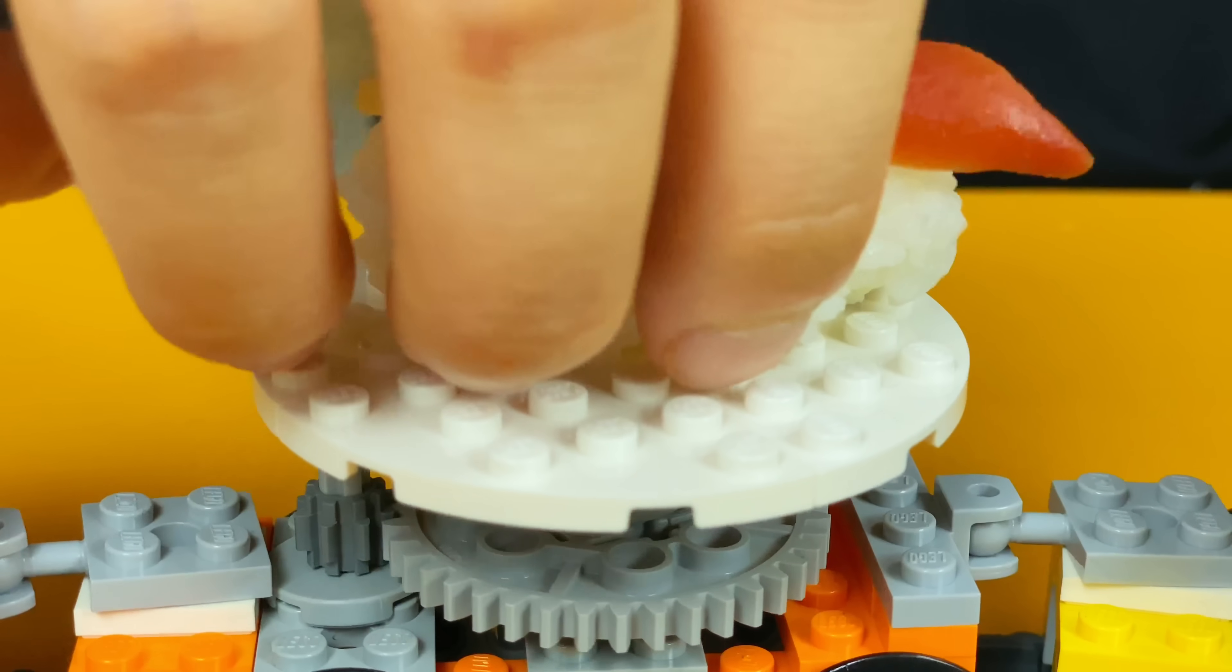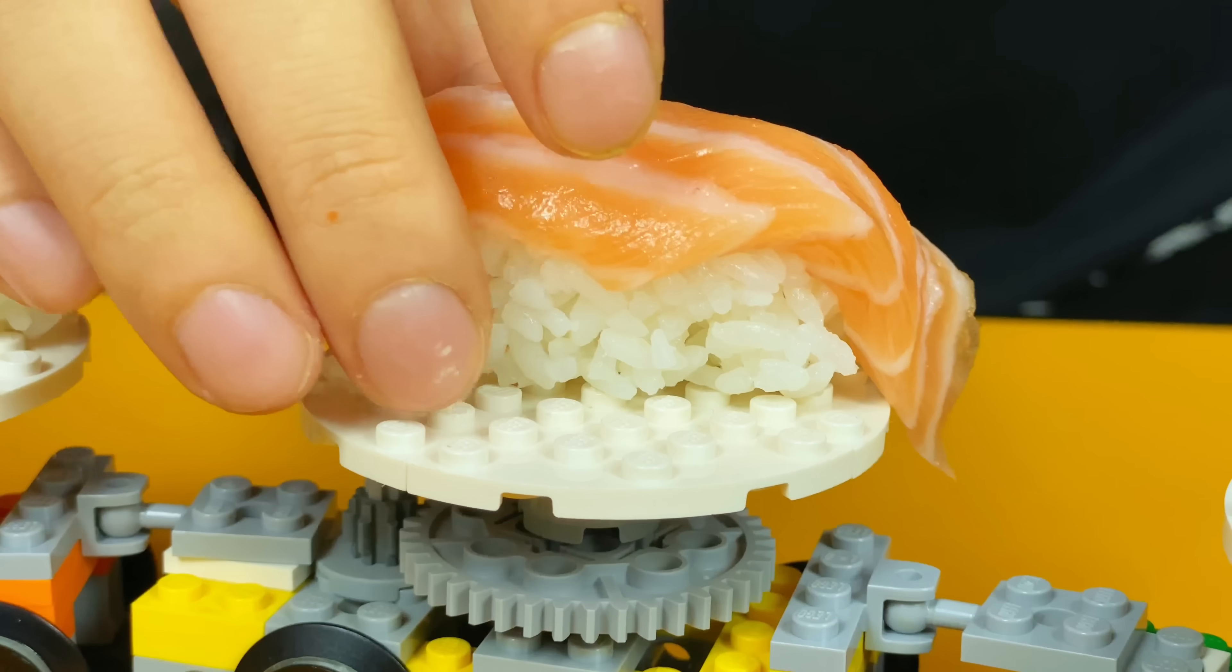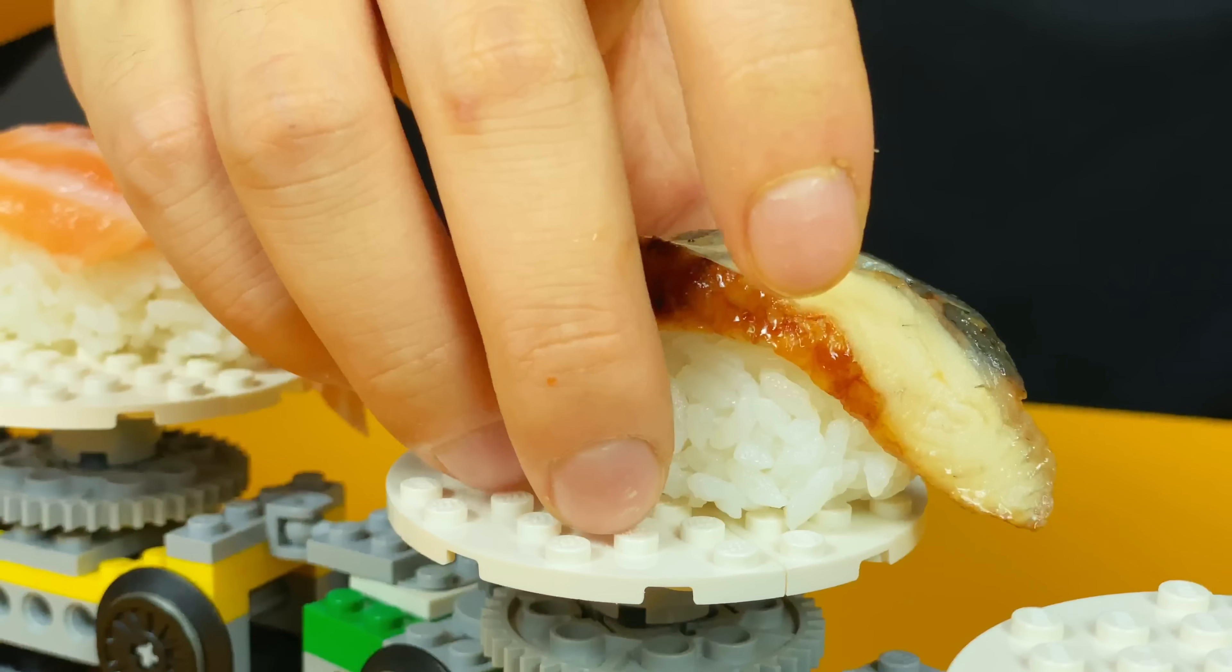My favorite is salmon, but I also prepared shrimp, surf clam, and eel. I didn't test the train before. I wish it could work with sushi on it.